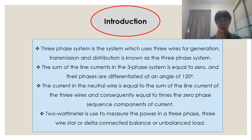The three-phase system can also be used as a single-phase system if one of the three phases and the neutral wire is taken out from it. The sum of the line currents in the three-phase system is equal to zero and their phases are differentiated at an angle of 120 degrees. The three-phase system has four wires: the three current conductors and one neutral. The current in the neutral wire is equal to the sum of the line currents of the three wires, and consequently equal to the square root of three times the zero phase sequence components of current.